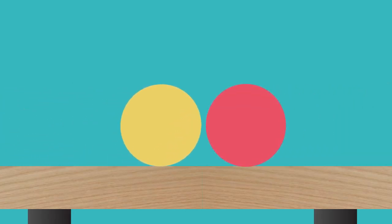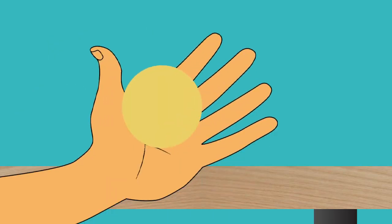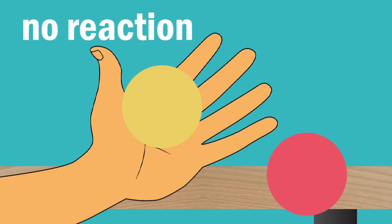If you slowly roll the ball of yellow plasticine towards the ball of red plasticine, they will collide. However, if you pick up the ball of yellow plasticine, the ball of red plasticine will not be stuck to it. No reaction.